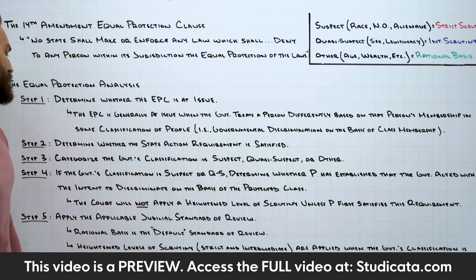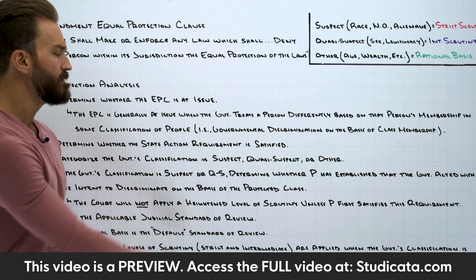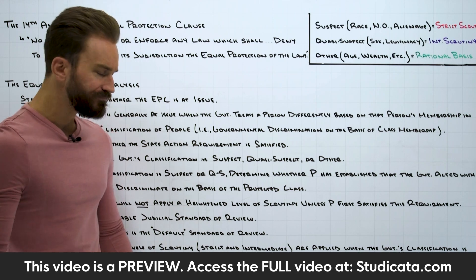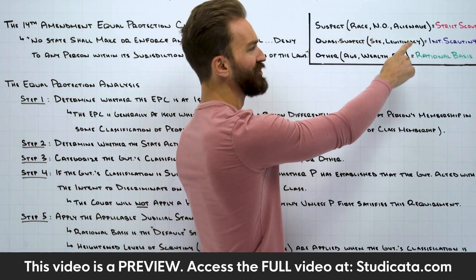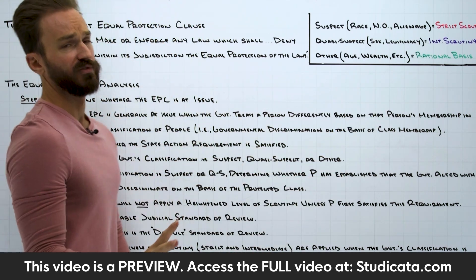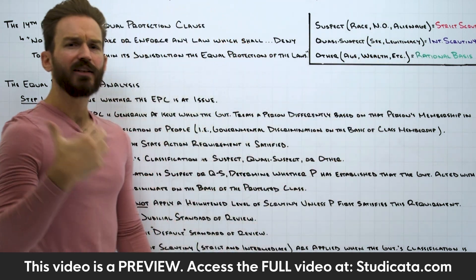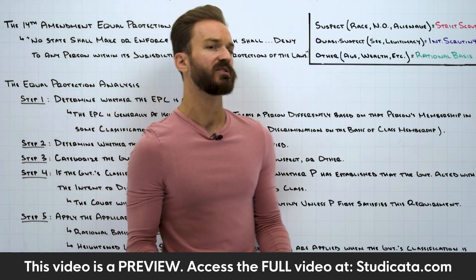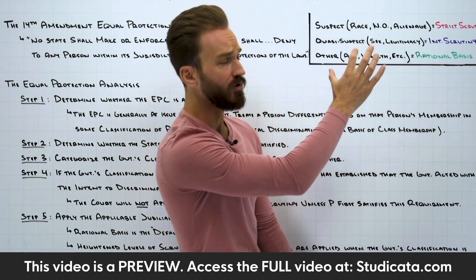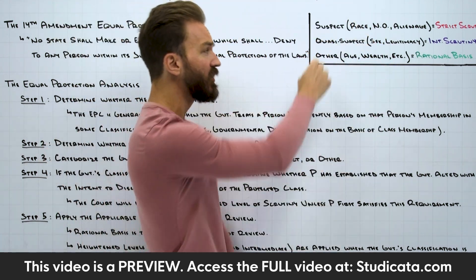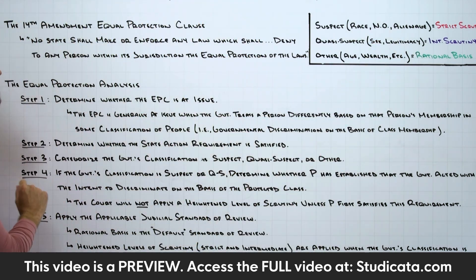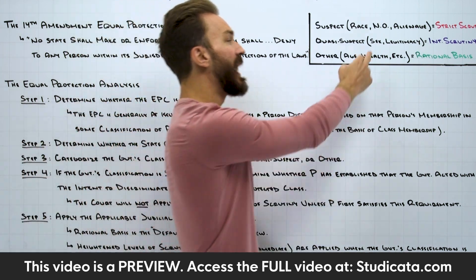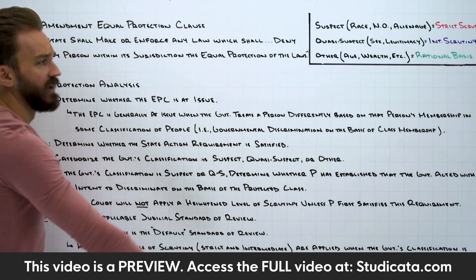Step three: we need to categorize the government's classification as suspect, quasi-suspect, or other. We have three major suspect classifications: race, national origin, and alienage. We have two major quasi-suspect classifications: sex and legitimacy. It's possible we could have additional suspect or quasi-suspect classes, but for our purposes these are the big five. If the government is discriminating on the basis of race, national origin, or alienage, we categorize that as suspect. If discriminating on the basis of sex or legitimacy, we categorize that as quasi-suspect.